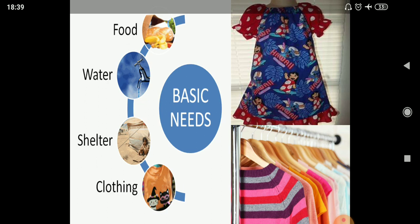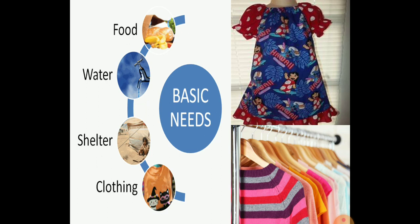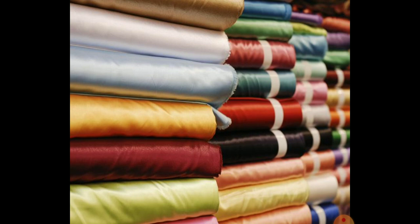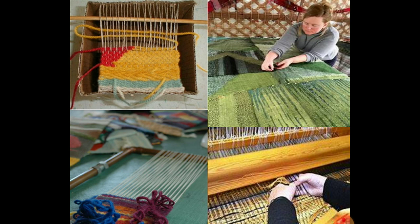Clothes are one of the basic and important requirements for human beings. Before the discovery of fiber and stitching of clothes, leaves and bark of a tree or animal skin was used by ancient people to cover their body. Therefore clothing is one of our basic necessities. Clothes are stitched from fabric, and fabric has a variety of textures, but each type of fabric is prepared by weaving the fibers.